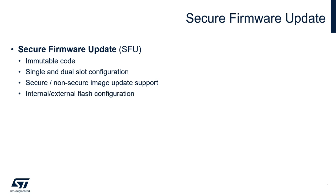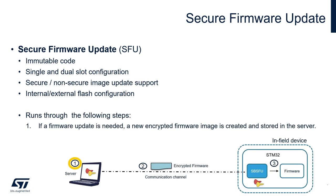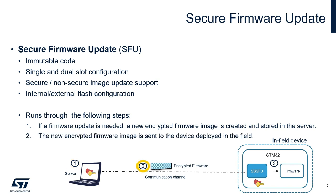Firmware updates support internal and external flash configurations. What are the steps of a typical firmware update procedure? The first step: a new firmware is created and stored in the server. Then, the new firmware is sent to the device deployed in the field over a potentially non-secure channel. The firmware image stored in the server and sent over the communication channel could be encrypted depending on the firmware configuration, so that only authorized devices that have access to the encryption key can decrypt the firmware package. At this point, the new firmware image is downloaded, checked, and installed. Integrity is checked to ensure that the received image is not corrupted, while authenticity is verified to prove that the firmware image is coming from a trusted source.